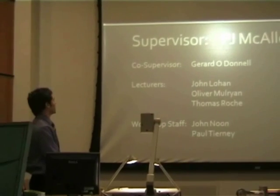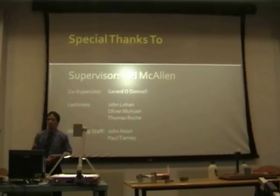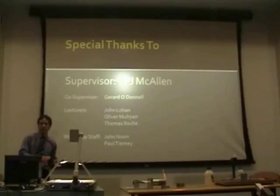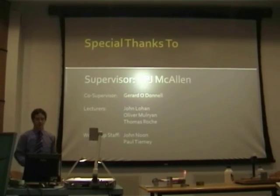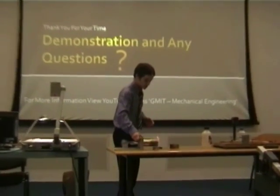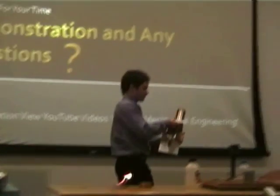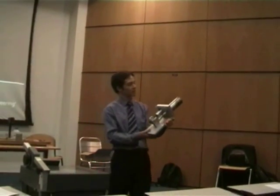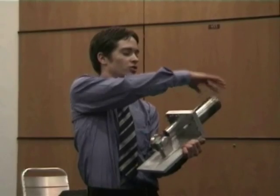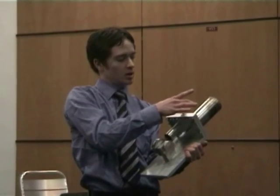A special thanks to my supervisor PJ McAllen, co-supervisor Jordan O'Donnell, and lecturers John Lohan, Marguerite Thomas, and Roach, as well as workshop staff. This is my Stirling engine — I'll demonstrate it now. At the moment it's running on the thermal capacity of the stainless steel, at around 200°C with a lower temperature of about 50°C. It can be powered from solar radiation or alcohol, and has an engine efficiency of 11%.